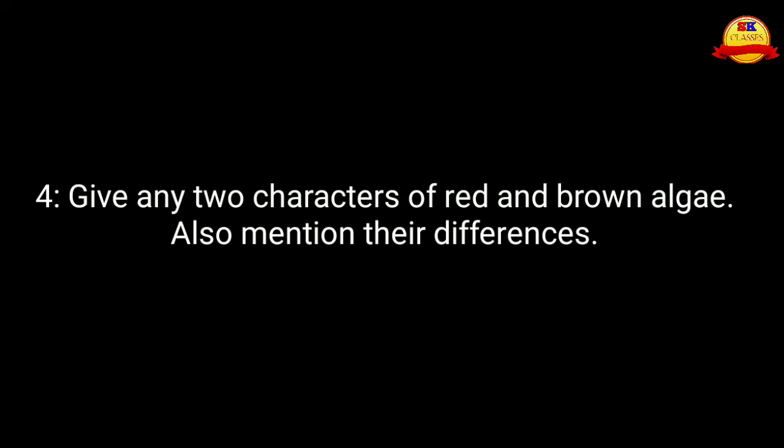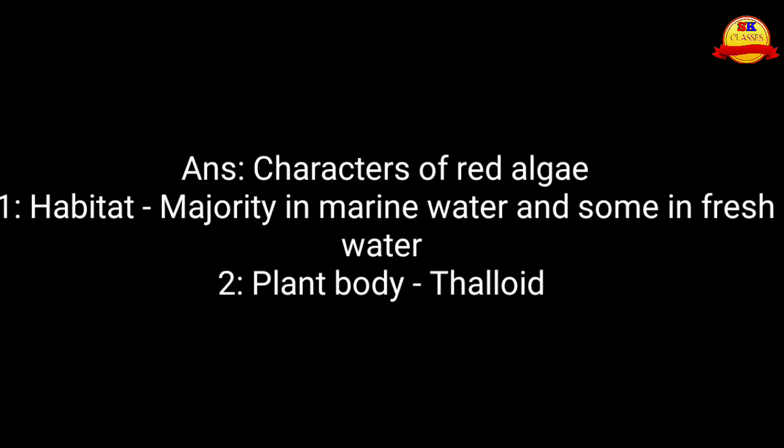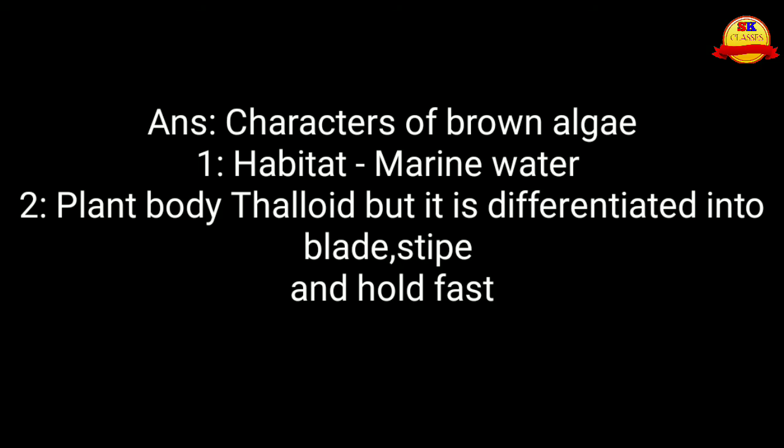The next question: give any two characteristics of red and brown algae and also mention their differences. For red algae: the habitat is majority in marine water and some in fresh water, and the plant body is thallite — meaning it cannot be differentiated into root, stem, and leaves. For brown algae: the habitat is marine water, and the plant body is also thallite but it is differentiated into blade, stipe, and holdfast.